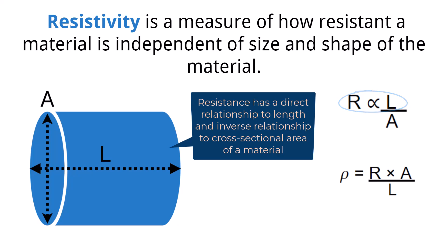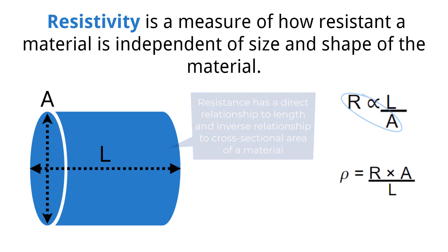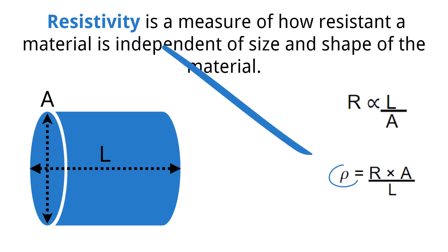Resistance has an inverse relationship with the cross-sectional area of the resistor. This means that as the resistor gets wider, the resistance decreases. This should make sense as there is a greater area for the electrons to flow, thus increasing the current — meaning more electrons can move through the resistor. Resistivity is the measure of how resistant a material is, independent of the size and shape of the material.